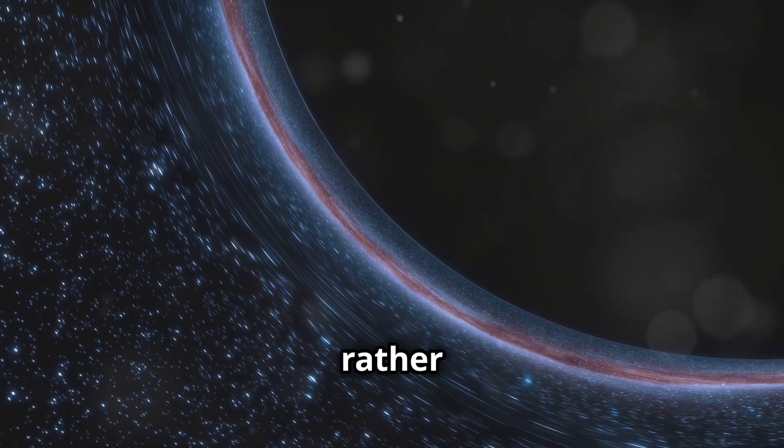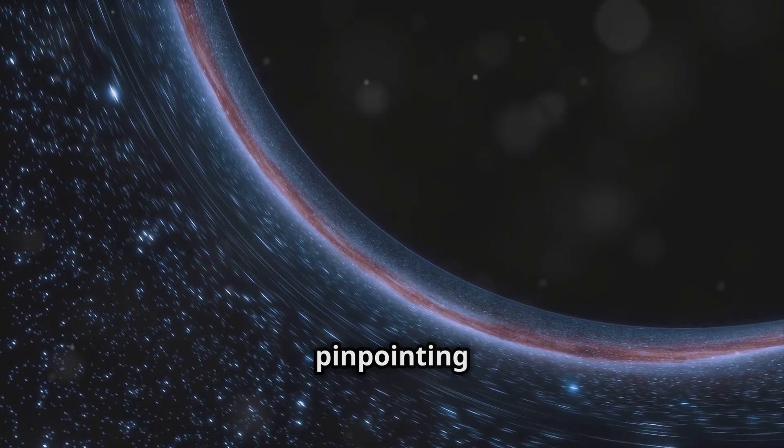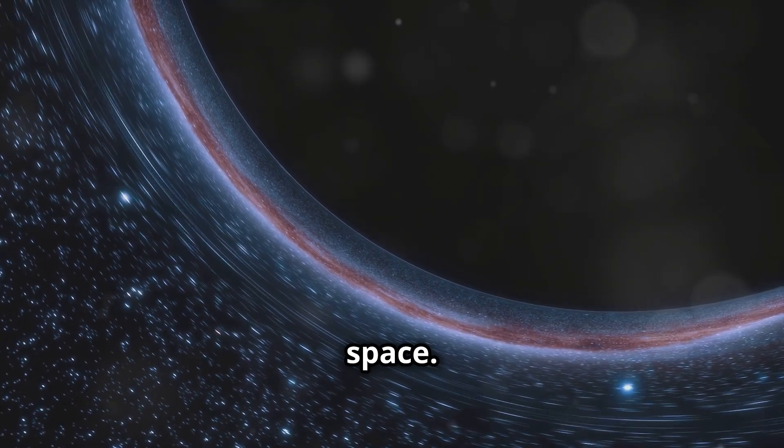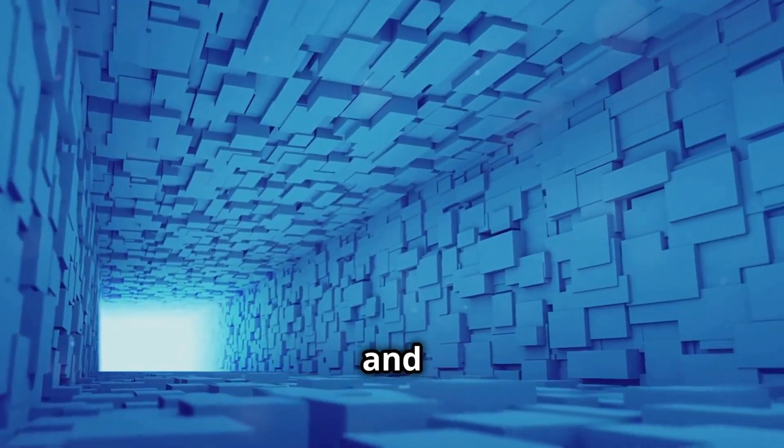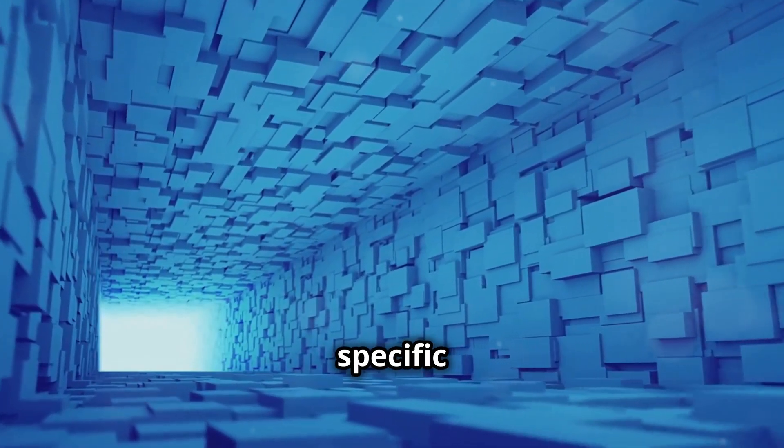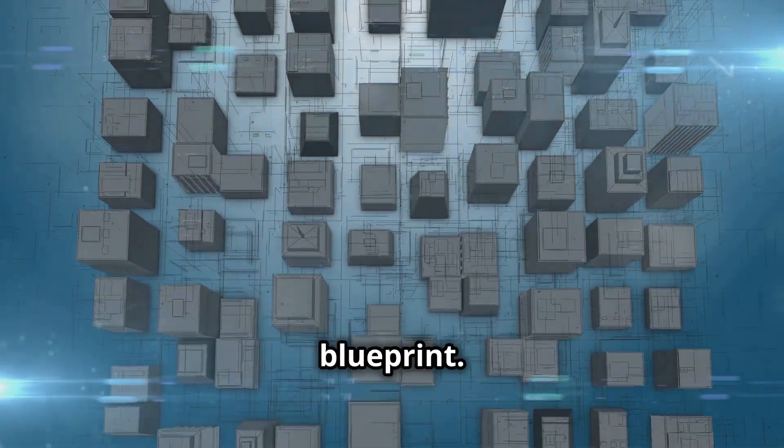But what exactly are dimensions? They're not physical objects, but rather coordinates, a framework for pinpointing the location of anything in space. Imagine a grid, like the lines on graph paper. Each line represents a dimension, and the point where they intersect is a specific location in space.